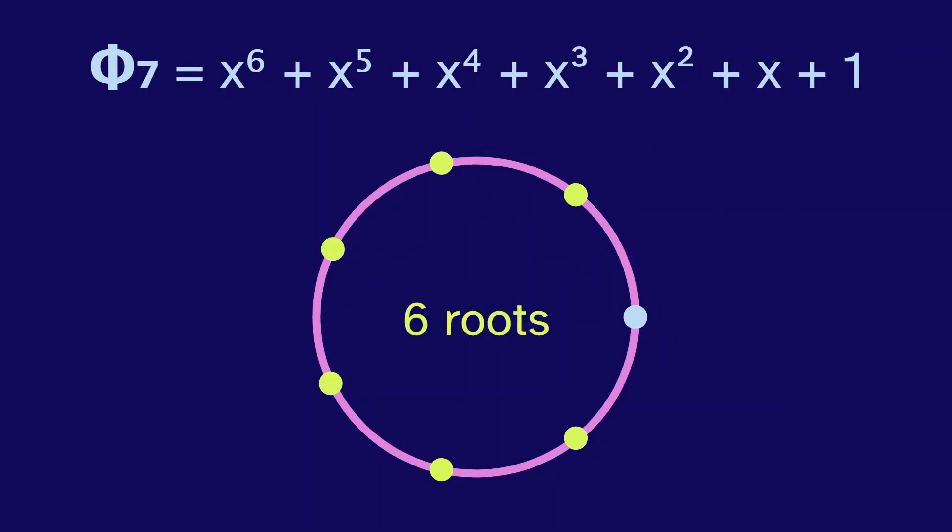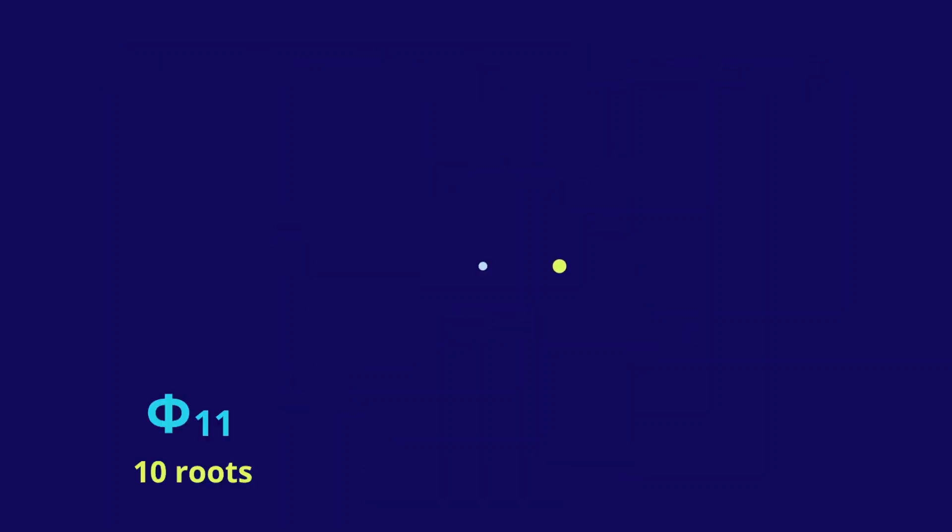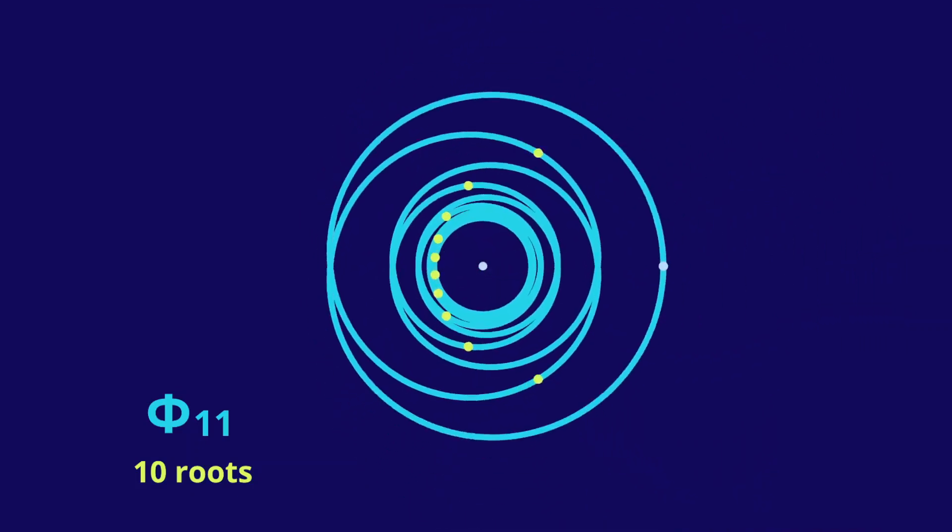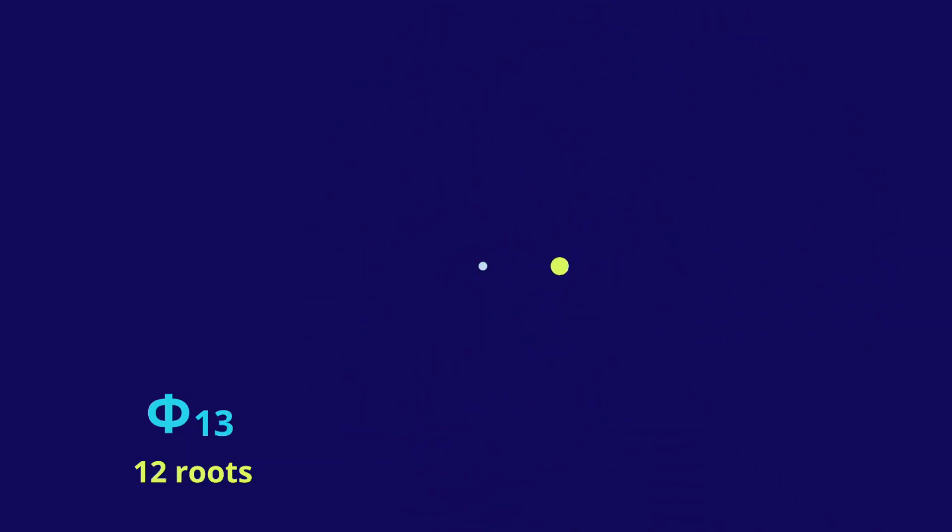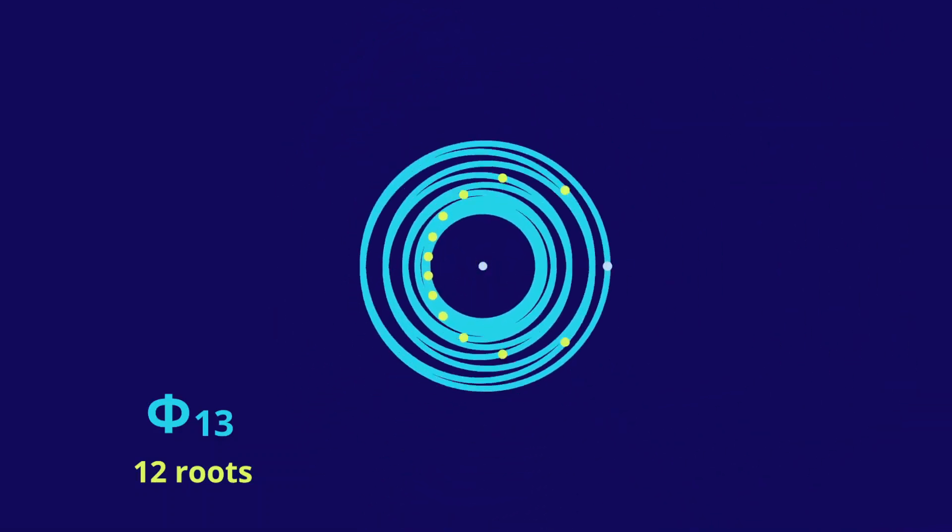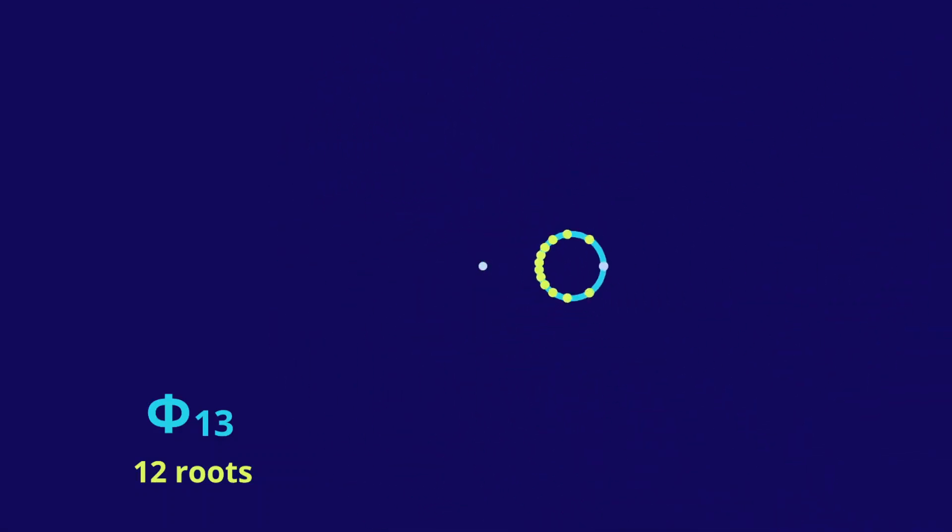With our other example, the 7th cyclotomic had 6 roots. Because 7 is prime, none of the distances for these points can be simplified. Except for 1 itself. And this happens with all of the other primes. The 11th cyclotomic has 10 roots. The 13th cyclotomic has 12 roots. And these prime cyclotomics have similar looking animations.